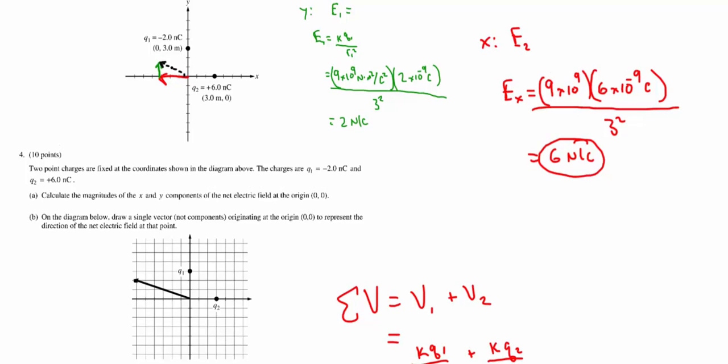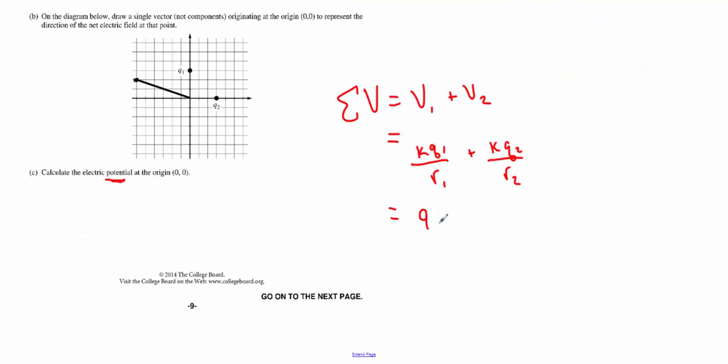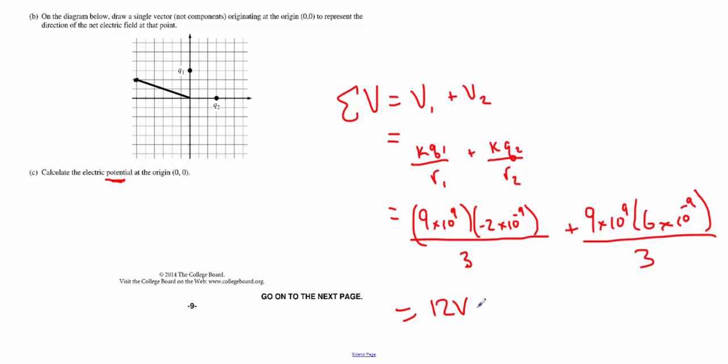Your total voltage is the voltage due to the first charge plus the voltage due to the second charge. It is simply kq1 over its distance from the origin plus kq2 over its distance from the origin. All you've got to worry about is maintaining proper sign. So it's 9 by 10 to the 9 times negative 2 by 10 to the negative 9 divided by 3 meters, plus 9 by 10 to the 9 times the positive charge, 6 nanocoulombs, divided by 3. You end up getting 12 volts.